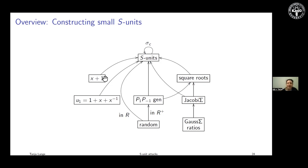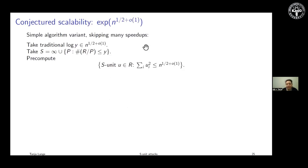Our S-units come from: the prime above two; the cyclotomic units U_c for c = 1; random elements; random elements from subfields; and nice mathematical numbers. Automorphisms give us more. Getting the S-generator g is either a sub-exponential time computation or waiting for a quantum computer. Our conjecture is that the whole attack remains sub-exponential. We use a much larger set of S-units than any previous attempt — previous work used a relatively small S.